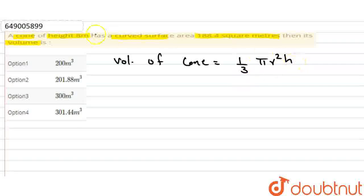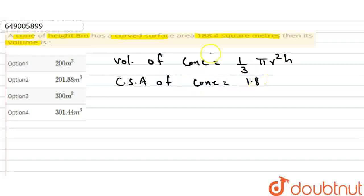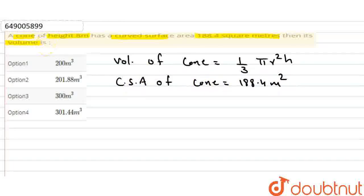The height h is 8 meters. We need to find the value of r. The curved surface area of the cone is equal to 188.4 square meters.